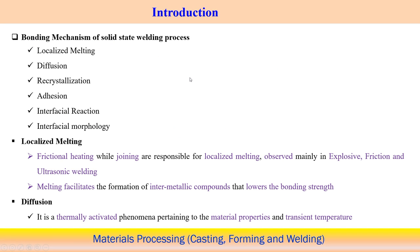Now we look at the bonding mechanisms in solid state welding. One mechanism is localized melting — although solid state deformation should be below the melting point temperature, very localized melting can happen, though overall bulk melting does not occur. Another mechanism is diffusion: bonding occurs as elements diffuse from one component to another at the interface.